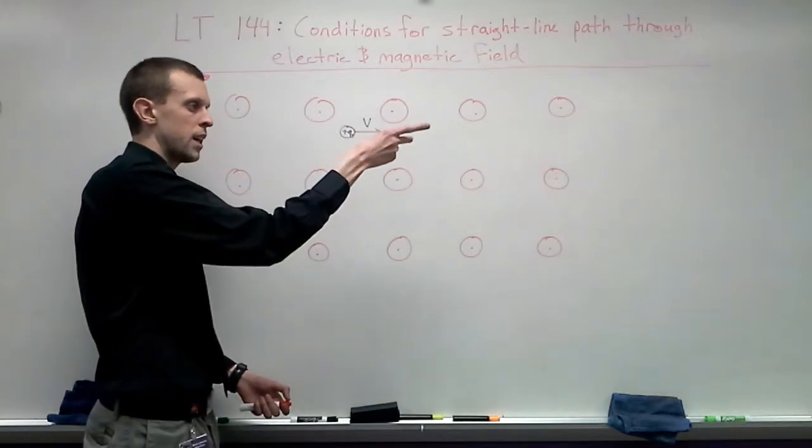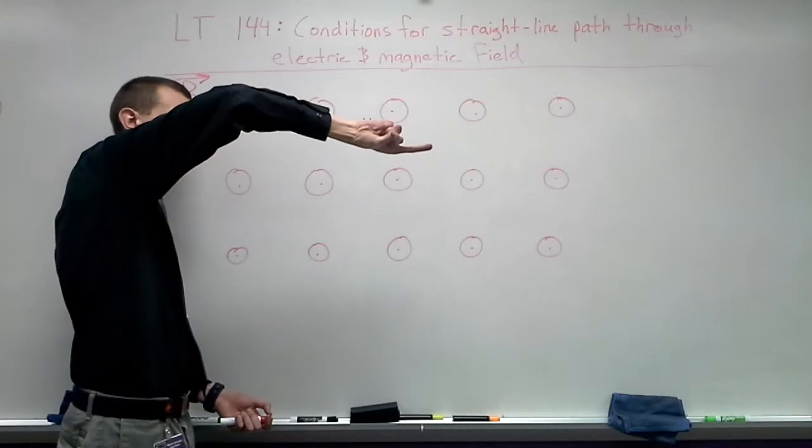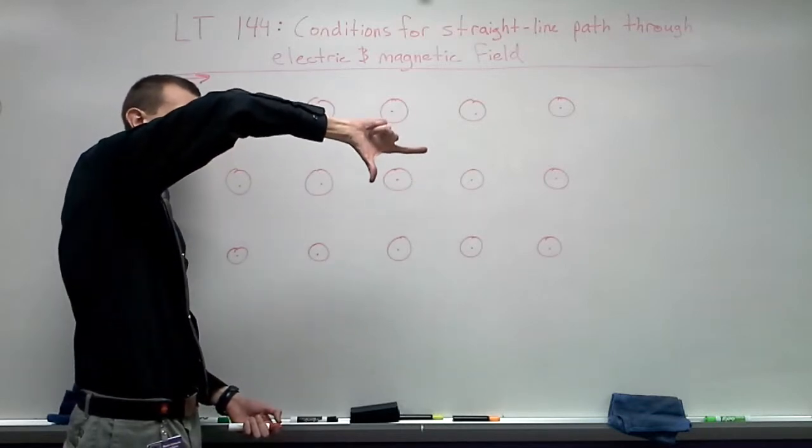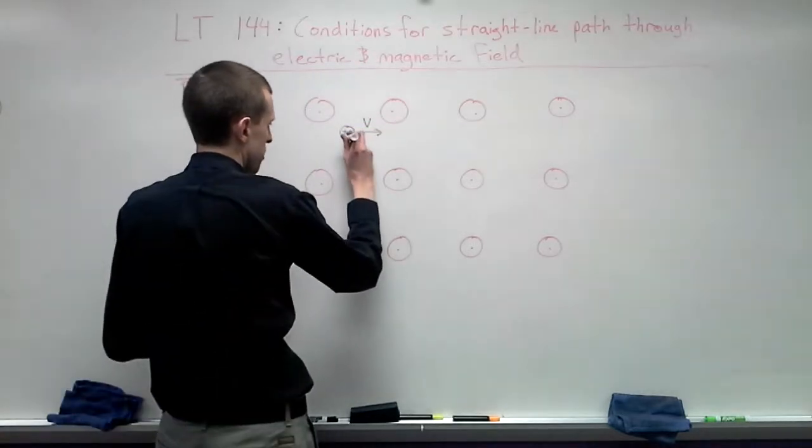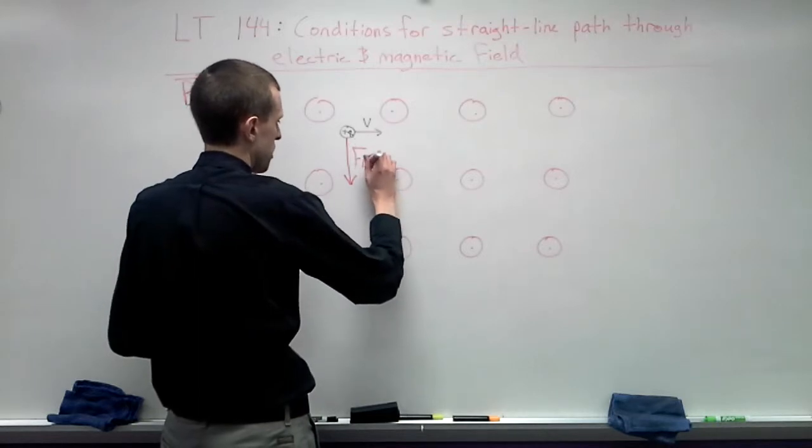So that's out of the board. So I have my pointer this way. I need to get my middle finger out of the board, so we'll rotate like this. And then my force is going to be acting downward on this. So the force due to the magnetic field will be this way. And I'll label that FB.